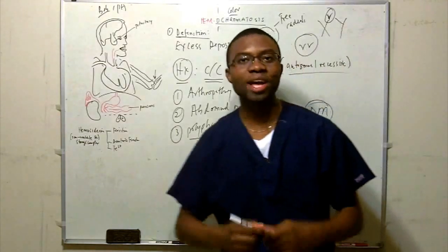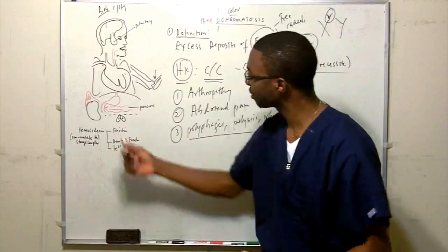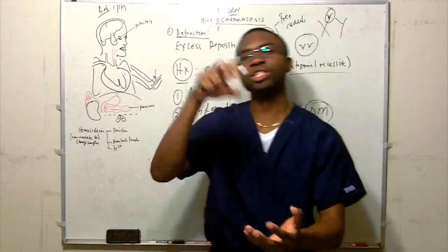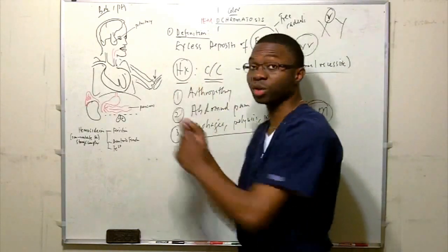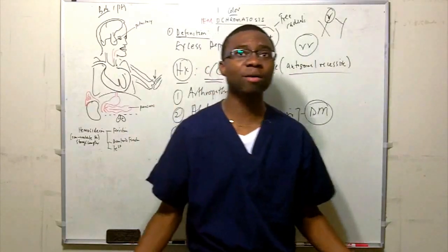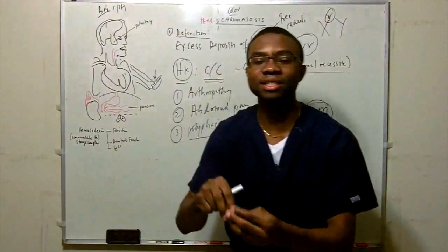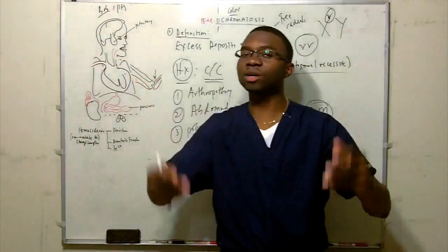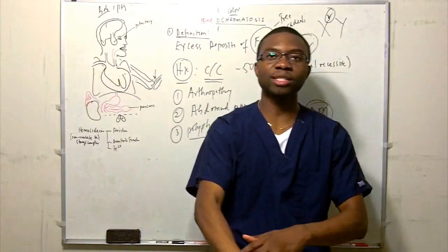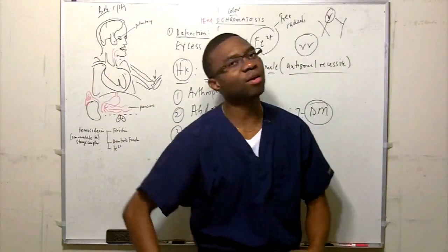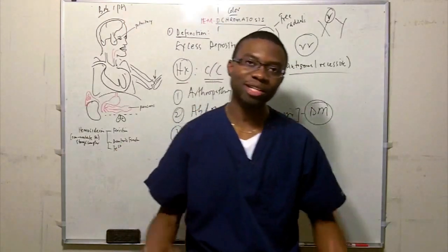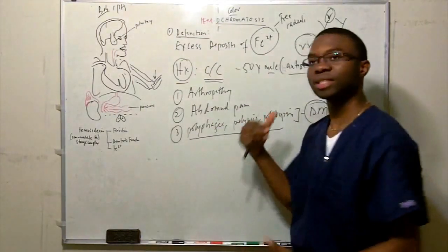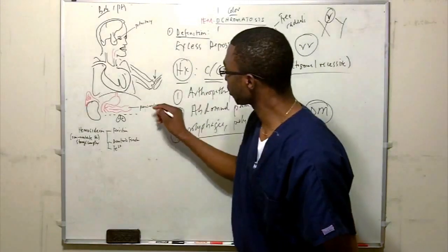Why do they have diabetes? We call it bronze diabetes. It's the pancreas that gets hit. The hemosiderin deposits in all tissues — if it goes to the joints you get arthropathy; when it goes to the pancreas, it damages the islets of Langerhans that make insulin. No more insulin means elevated glucose, hyperglycemia, osmotic diuresis — you urinate excessively, get dehydrated, eat more. So it causes diabetes.